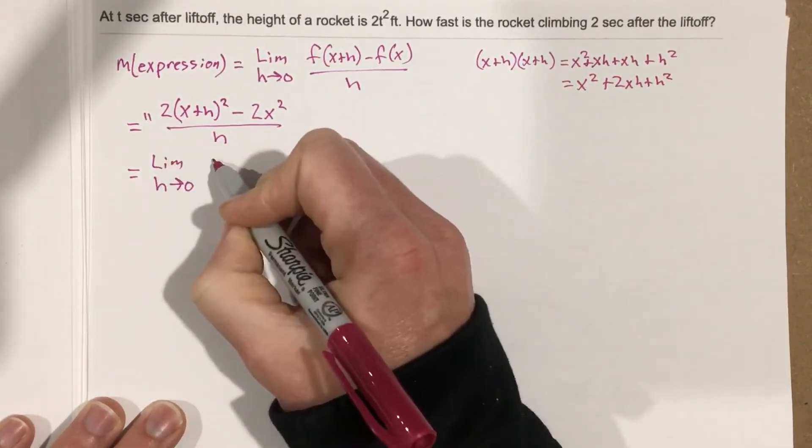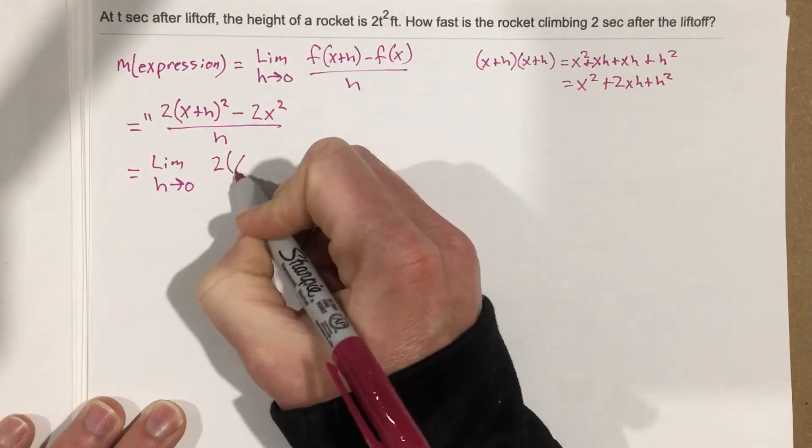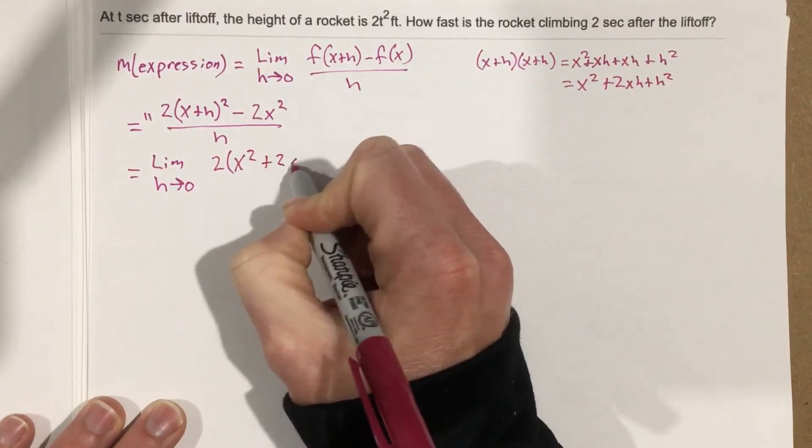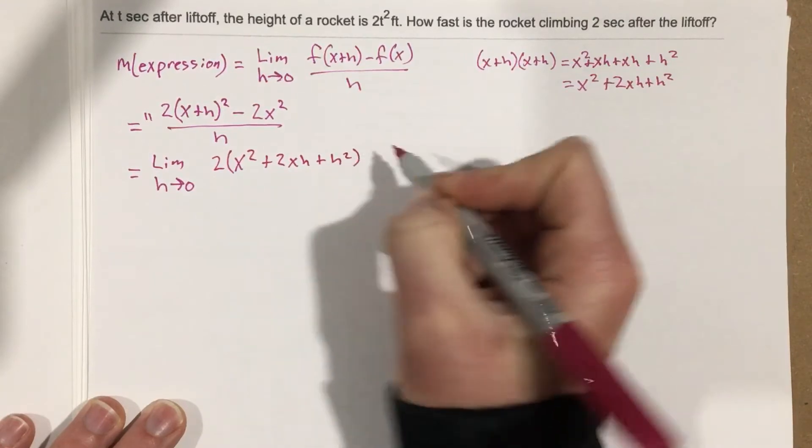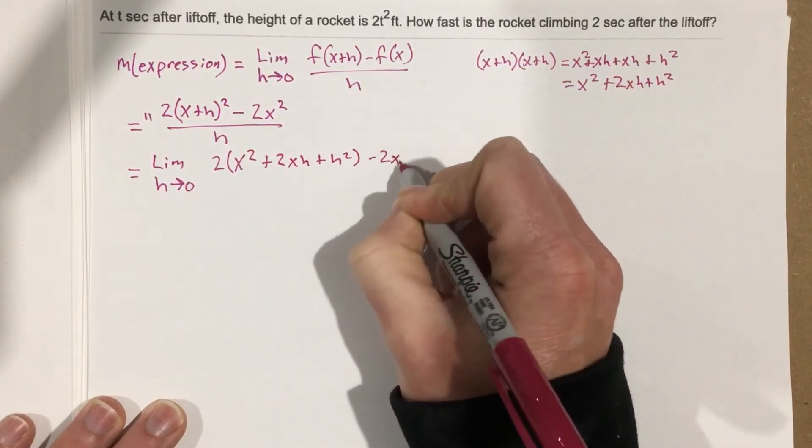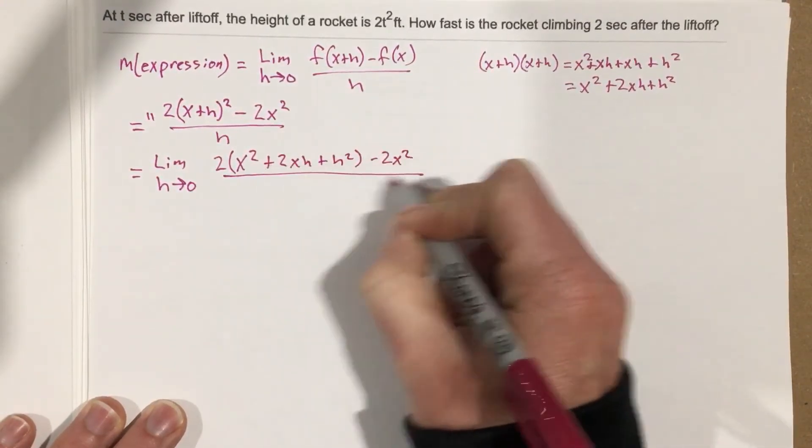We're going to plug that in. That's 2 times x squared plus 2xh plus h squared, minus 2x squared, all over h.